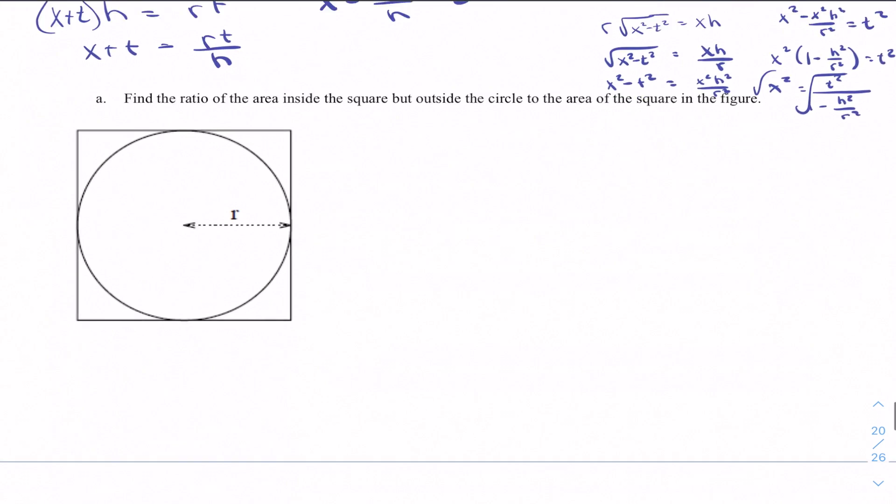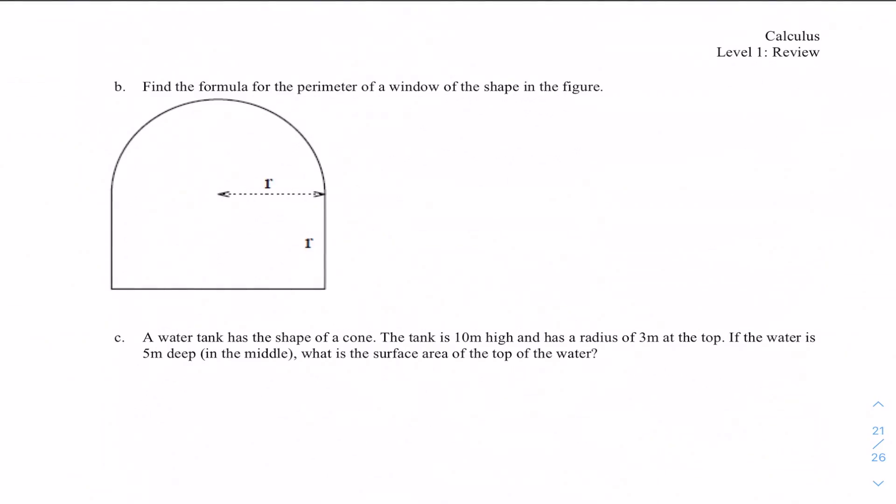So we're going to skip example a, and we're going to jump to example b. So pretend you're looking at a basketball layout. Find the formula of the perimeter of the window of the shape in the figure. All we are given is the radius of the circle. So we'd have to think, if we were looking at this half circle, how do you find the perimeter of a circle? Well, we call that the circumference. The circumference of a full circle is two pi r. This is a semicircle. So we would say pi r. This is half the circumference.